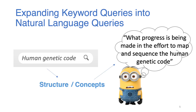We hypothesize that the difference between a keyword query and a natural language query lies in two parts: the grammar structure within the sentence and the new concepts. This work studies the effect of both factors by investigating various query expansion methods.